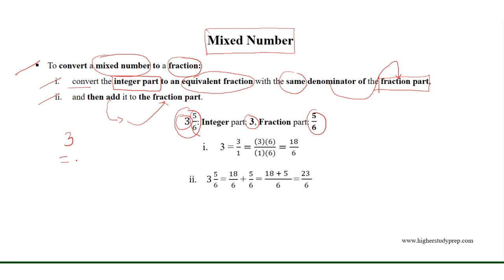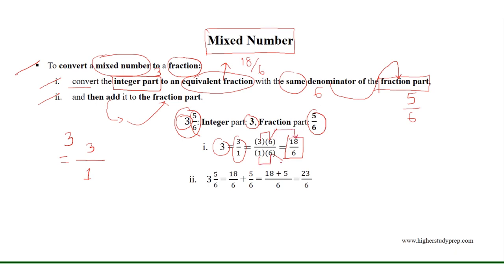The integer part 3 is equal to the fraction 3 over 1. In order to convert the integer part 3 to an equivalent fraction with the same denominator 6 as the fraction part 5 over 6, we need to multiply both the numerator and denominator of 3 over 1 by 6, which results in the equivalent fraction 18 over 6 for the integer part 3. Where 3 times 6 equals 18, and 1 times 6 equals 6.